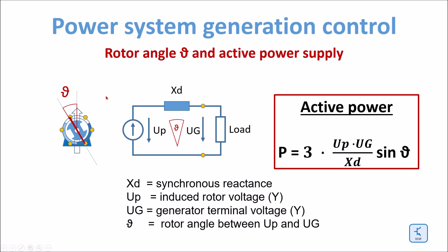Here we have a simplified model of a three-phase generator — this is a single-phase model. Here we have the induced voltage in the generator, then we have a synchronous reactance inside the generator, which are the generator coils mainly. Here we have the terminal voltage of the generator. In between the terminal voltage and the induced voltage we have this so-called rotor angle. The rotor angle between UP and UG is the same angle as the angle between the axis of the rotor and the rotating magnetic field in the three-phase coils.